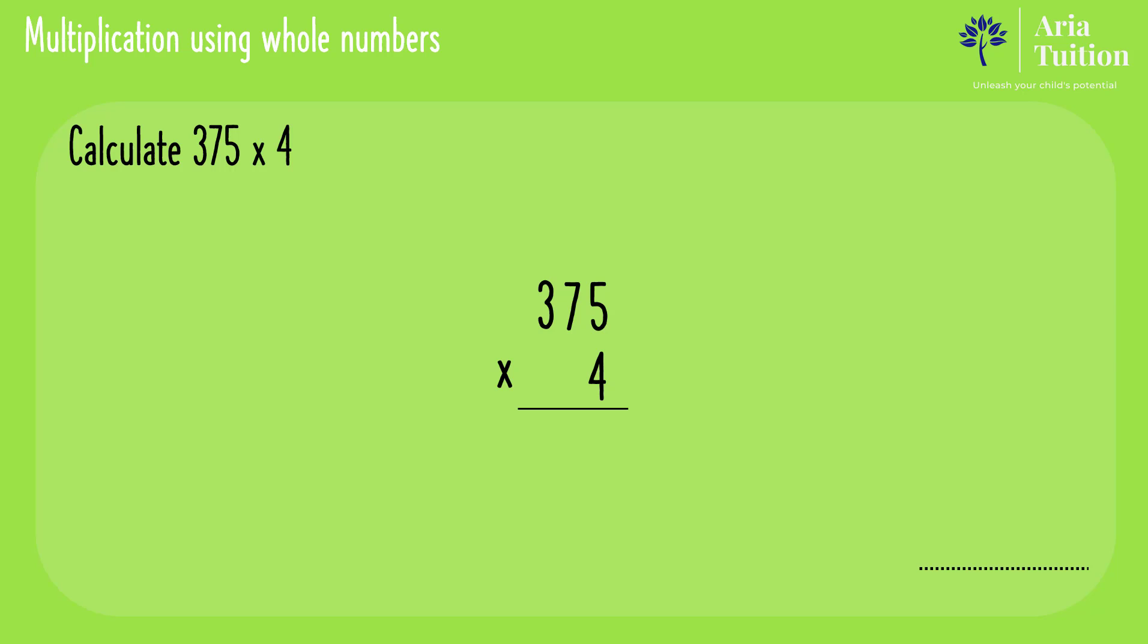First, start with the bottom right number and multiply upwards going from right to left. Therefore 4 is multiplied by 5, 4 is multiplied by 7, and 4 is multiplied by 3. Now we're ready to multiply.